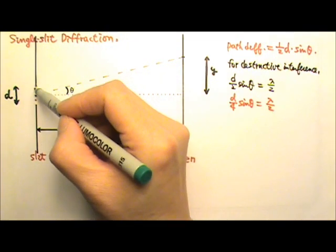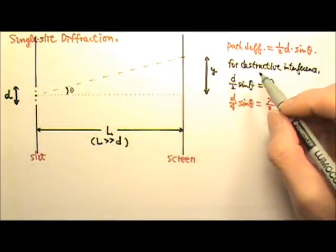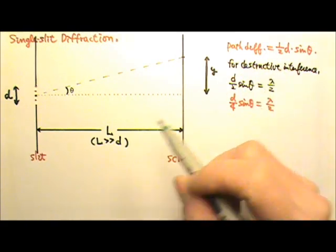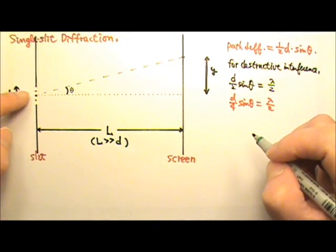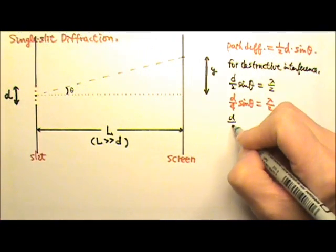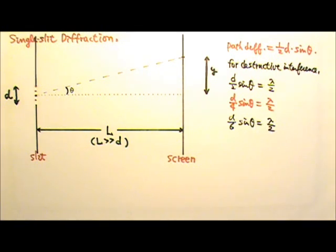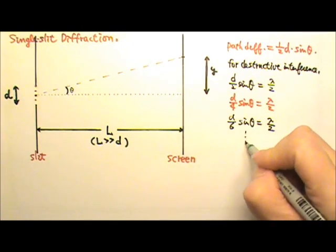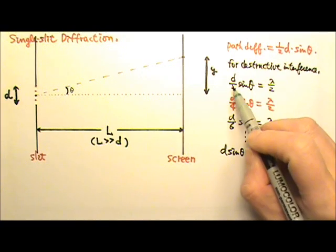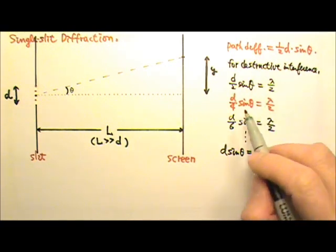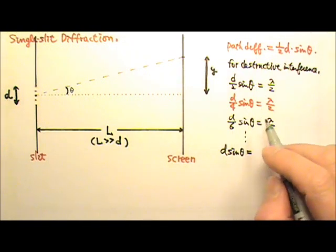For the next dark fringe, we divide all the point sources into six groups and pair them up again. The distance between each pair would be D over six, so D over six times sine theta equals half the wavelength. Continuing this pattern: multiplying through gives D sine theta equal to one lambda, then two lambdas, then three lambdas for successive dark fringes.